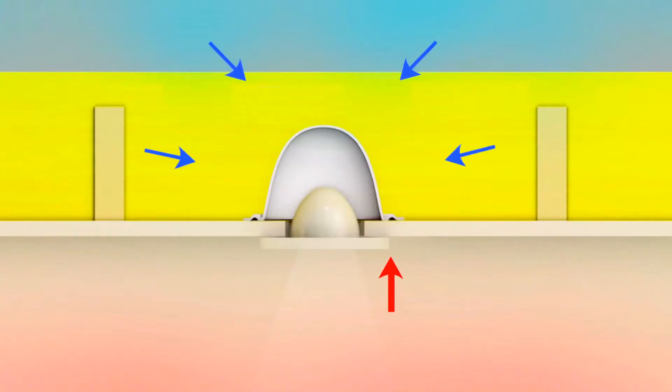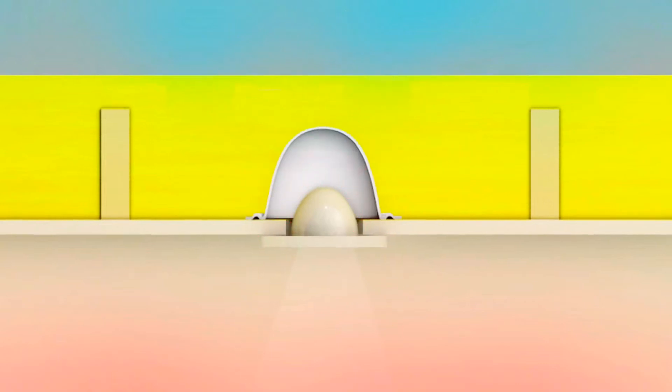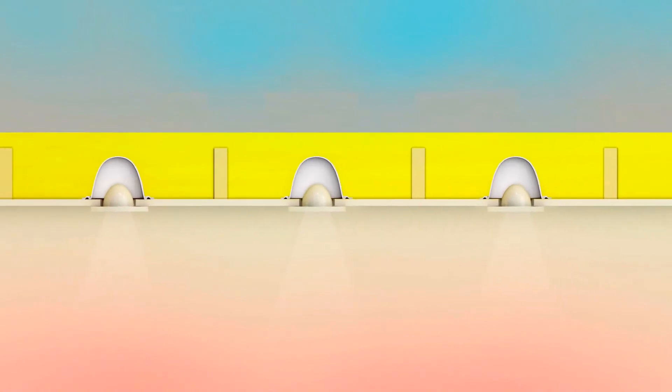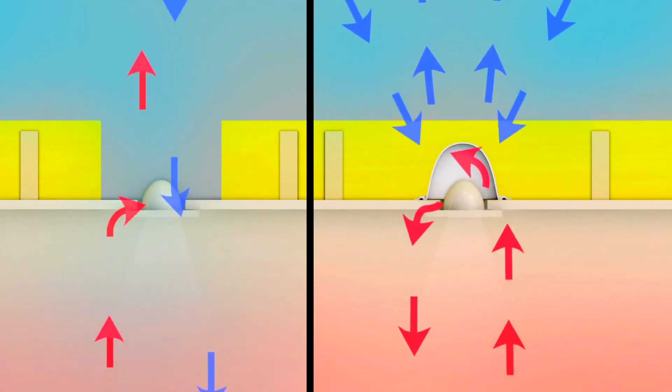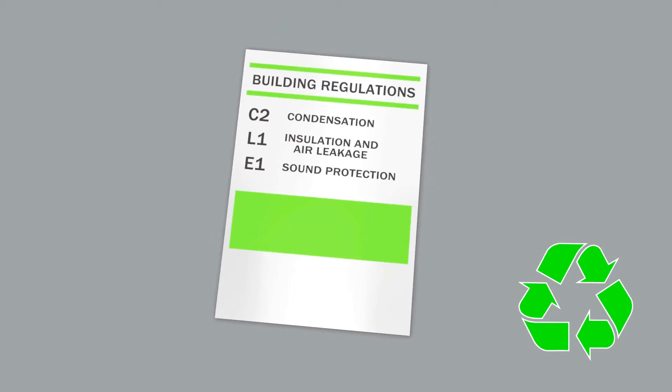It provides an airtight seal which dramatically reduces the air leakage and heat loss. Thermahood also allows for continuous insulation over and around the light. This drastically improves the insulation effectiveness and meets building regulations.